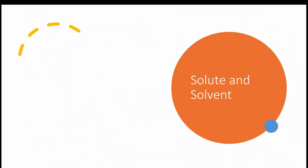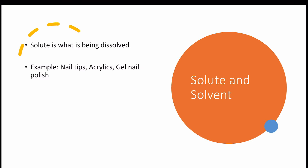Solute and solvent. A solute is what is being dissolved. An example of that would be nail tips, acrylics, gel, nail polish, silk wraps, fiberglass wraps — all those things are examples of something that is being dissolved, and it would be called a solute.